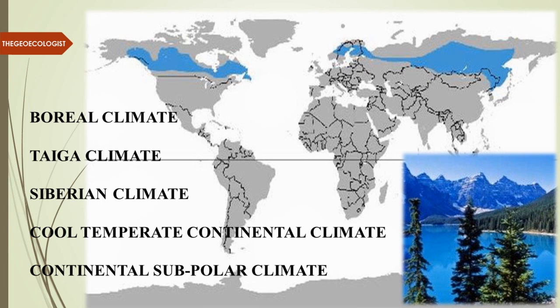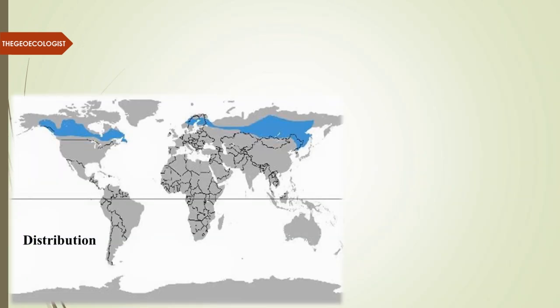There are various nomenclatures: boreal, taiga, Siberian, cool temperate, and subpolar. The term subpolar indicates it is close to the polar belt. Let's look at the characteristics further ahead.